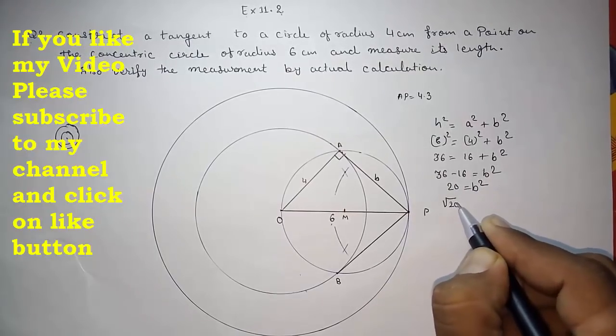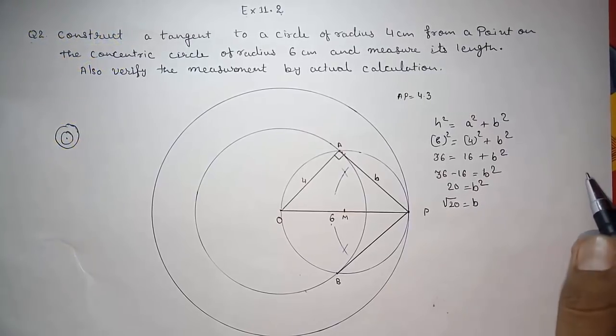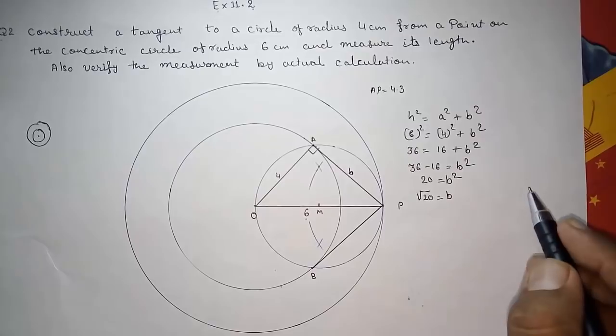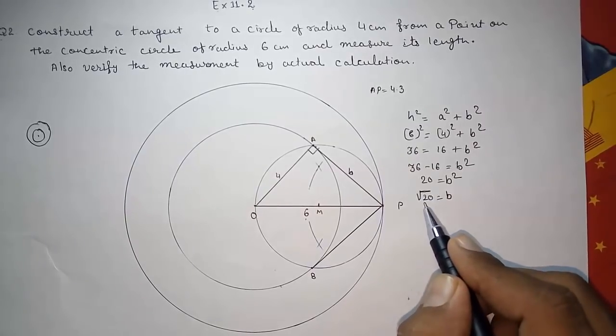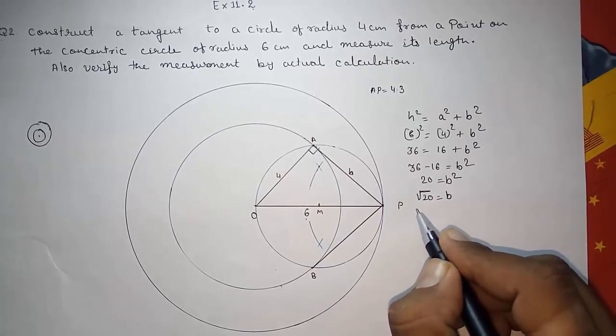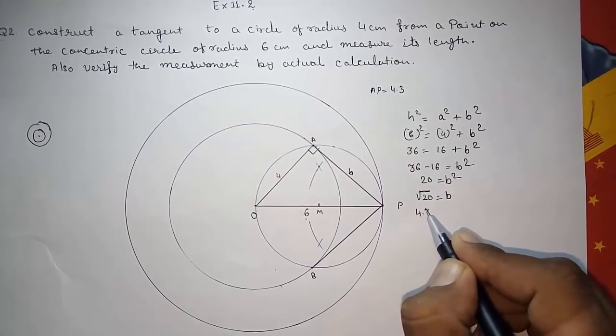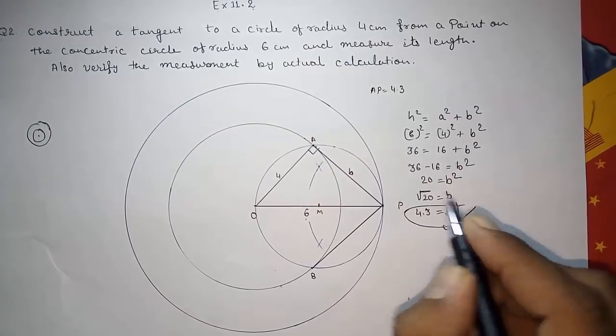So we have to find out the root of 20. That is B. So here we can find out with the help of long division method. I had made a video on how to find the root by long division method, you can see that. And it will be approximately 4.3 something like that. So we will get B is equal to 4.3.